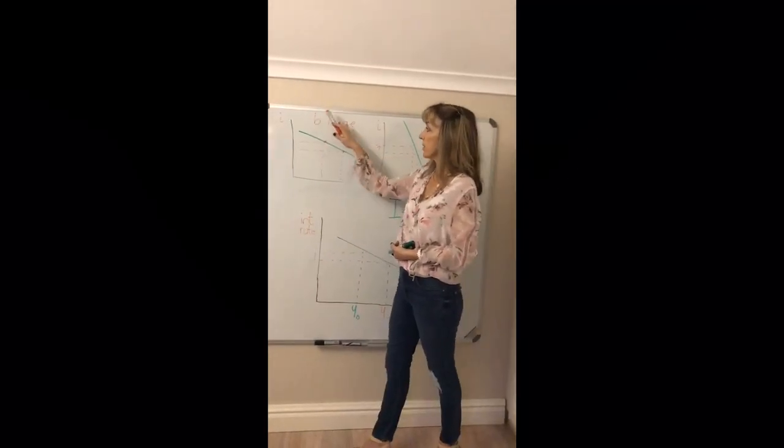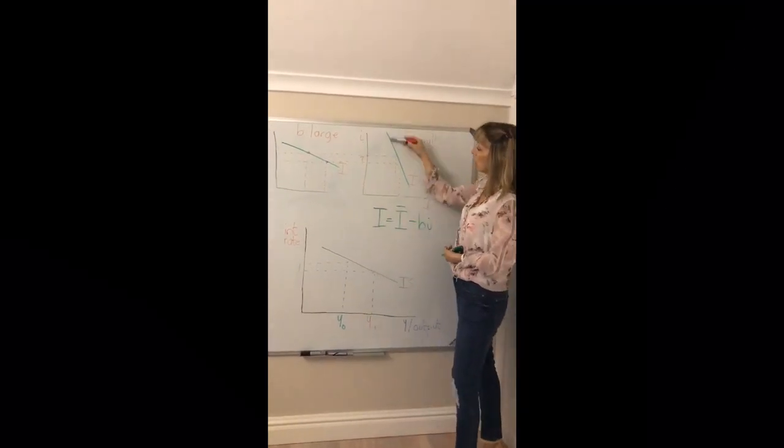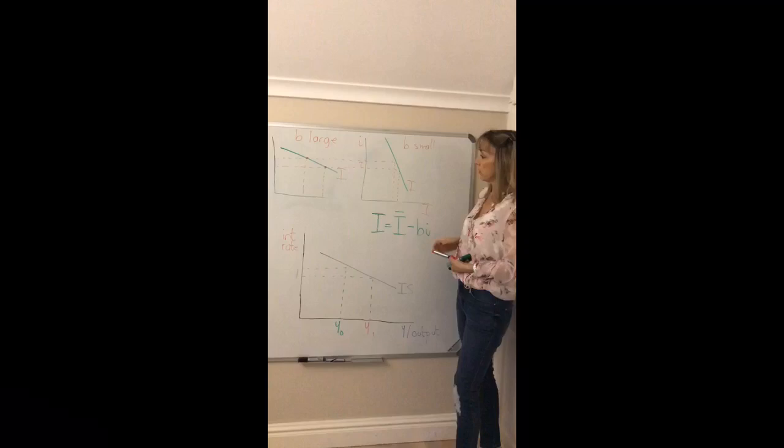Recall that when B is large you get a flatter investment demand curve. When B is smaller you get a steeper planned investment schedule.